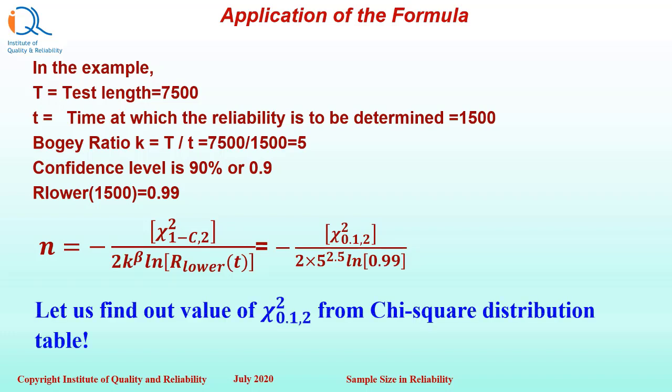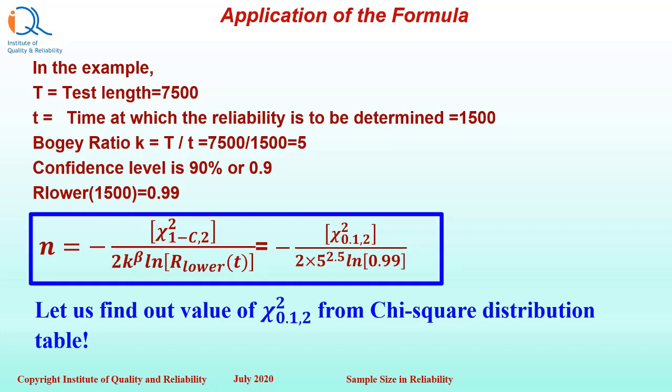Now we have seen the formula for sample size n. n equals minus Chi-square of 0.1 at 2 degrees of freedom, because confidence level is 90%, divided by 2 times k equals 5 raised to the power beta equals 2.5, and ln of the reliability 0.99.